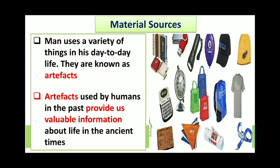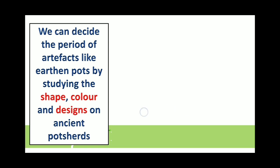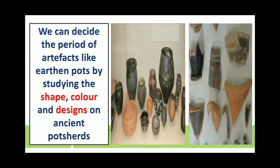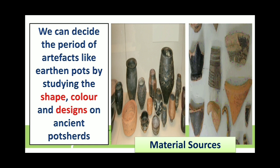For example, radio is not common today, but our grandparents and fathers had it. Through radio and other things that people used, we get information about that period, and that is why these are under material sources. We can also determine the period of artifacts like earthen pots by studying their shape, color, and designs. By the color and design, we can imagine or conclude the development of that period.